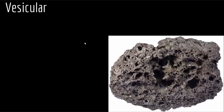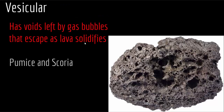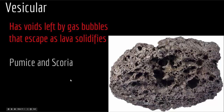The next type is vesicular texture. Vesicular textures are found in volcanic rocks and are characterized by many vesicles — small cavities formed by the expansion of gas or steam bubbles during solidification of the rock. These are basically holes in the rock representing expanding gases. Vesicular textures have voids left by gas bubbles that escape as lava solidifies. An example would be pumice or scoria. This is an example of scoria, and as you can see there are many holes and vesicles representing expanding gas and steam.